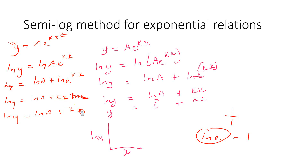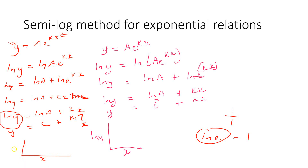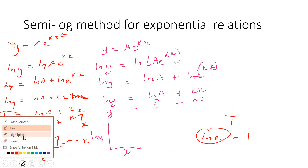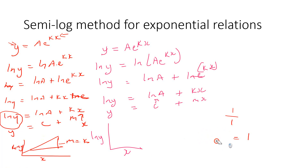Since ln and e are opposites of each other — like 1 divided by 1 — once you see ln and e together, that equals 1. So ln and e cancel out, leaving us with ln y = ln a + kx. Now I can see my x variable, the value beside it is k making that the gradient M, and ln a becomes my constant C. When plotting that graph, you're plotting x versus ln y, where the gradient can be used to find what k is. So whatever the gradient is, that is what k equals.